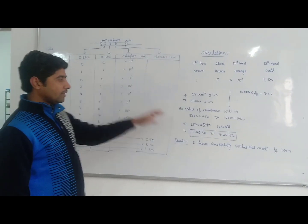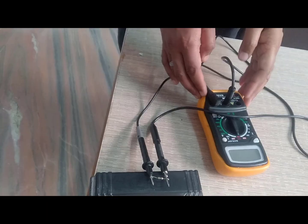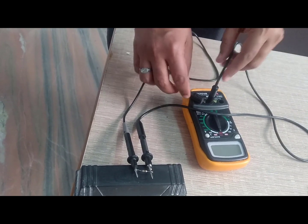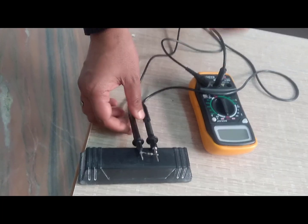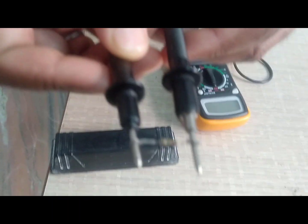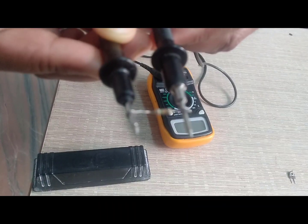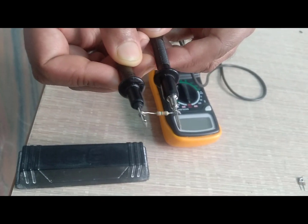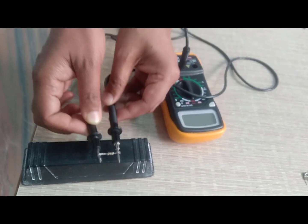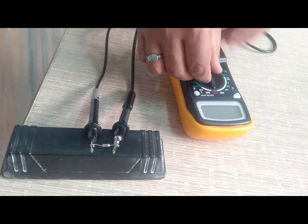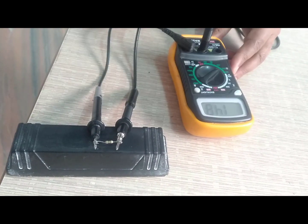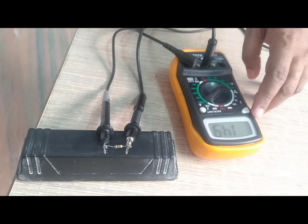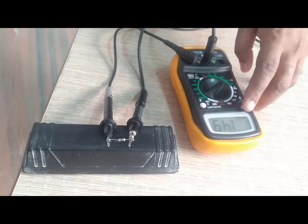Now I will verify this result using a digital multimeter. This is the multimeter with three nodes — a common node and a voltage node — connected by leads. Here is the carbon composition resistor with four bands: brown, green, orange, and gold. I will set the digital multimeter to the ohmmeter area at 200 kilohms. The value displayed on the screen is approximately 15 kilohms.